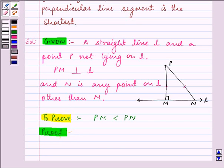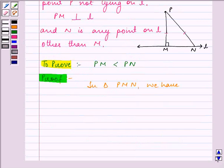Now in triangle PMN we have angle M equal to 90 degrees.